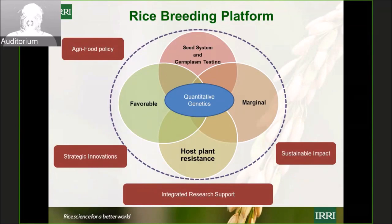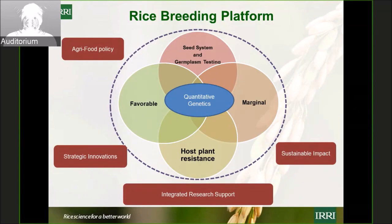This evidently led to a change of structure — breeding, rather than being done by one breeder, is done by the whole team. IRRI changed its structure into five different platforms, and the rice breeding platform was one of them. Within the rice breeding platform, different clusters were created and each of us was assigned specific responsibilities.